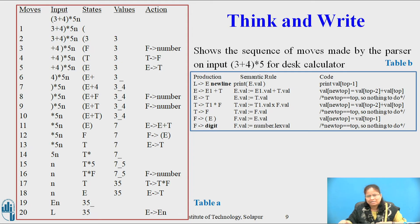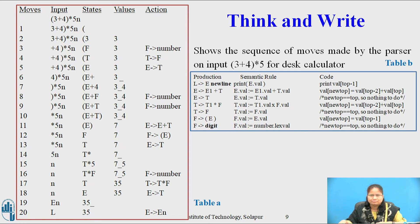On the sixth move, the parser shifts the state corresponding to the token operator plus, for which no attribute value is required, onto the stack. The state is represented by plus and no value is in the val field. On the seventh move, the parser shifts the state corresponding to token digit whose attribute value is 4 onto the stack. On the eighth move, the parser reduces by F → digit and implements F.val = digit.lexval. On the ninth move, the parser reduces by T → F; no code fragment is associated with this production so the val array is left unchanged.